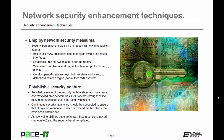Employing network security measures is another enhancement technique. Security personnel should strive to harden all networks against attacks. Some of the ways this can be achieved include the implementation of MAC filtering on all switch and router interfaces to limit what devices can connect. Disabling all unused switch and router interfaces is another recommended technique. Whenever possible, use strong authentication protocols — specifically the 802.1x protocol. Another method to harden the network is to conduct periodic site surveys, both wireless and wired, to detect and remove rogue or non-authorized systems from your network. This should be done on a regular basis.